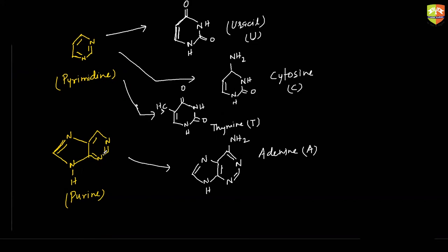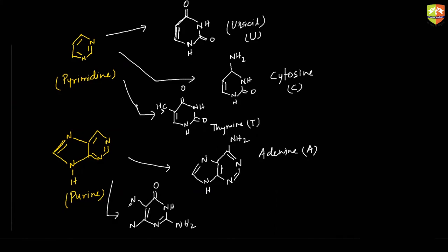Guanine: write down this structure. In guanine we have C double bond O and NH2 here. The structure has double bond nitrogen, hydrogen here, nitrogen this side, nitrogen this side, and both are attached with double bond CH. Hydrogen is here — this structure is guanine, represented by G.